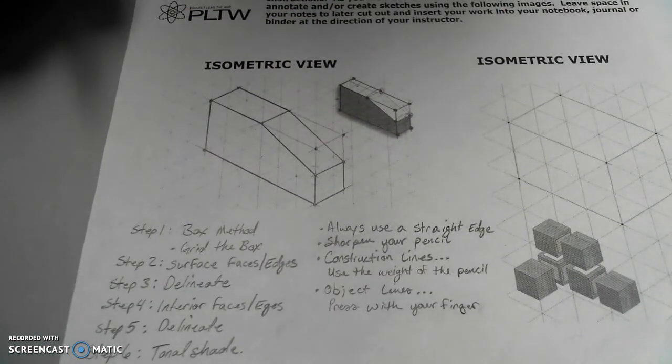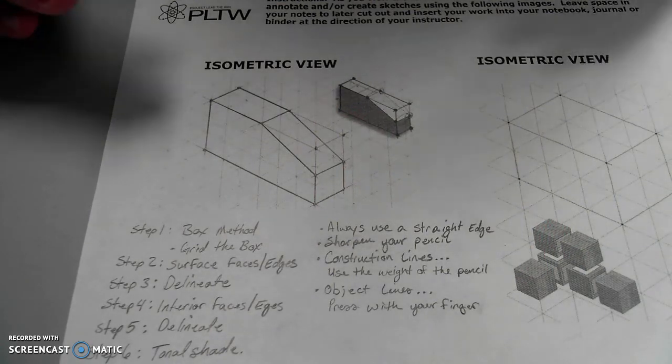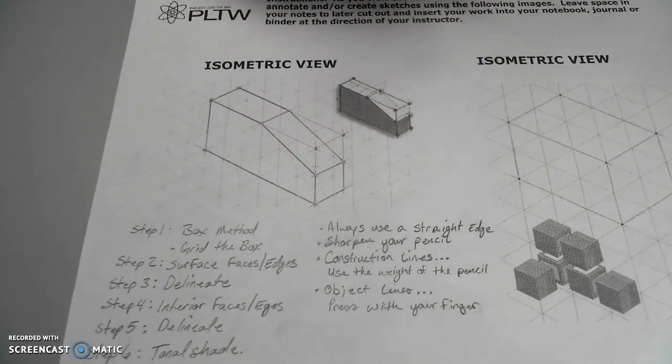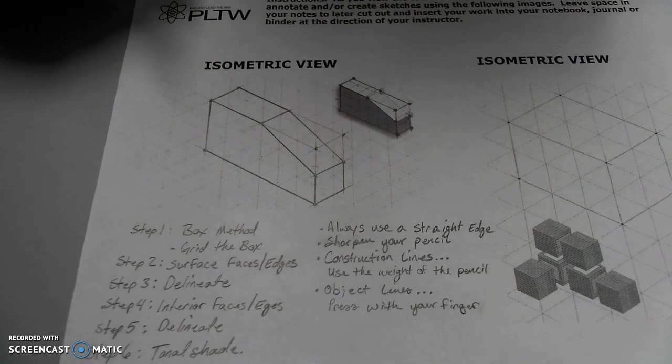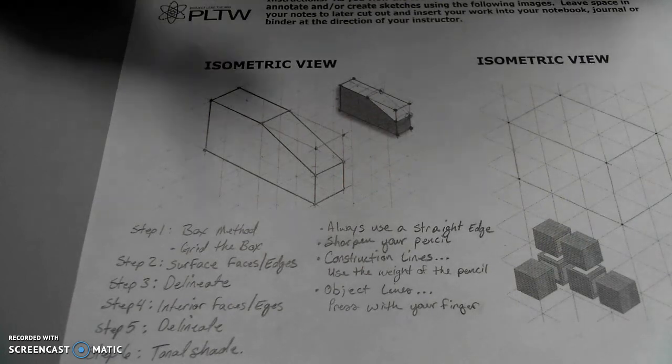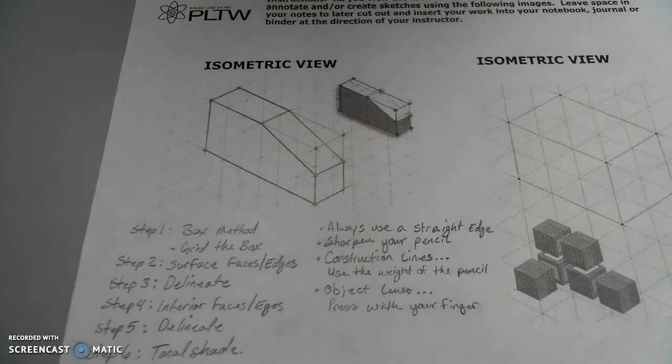The object is all but done. I need simply to apply some tonal shading. Tonal shading goes the same way. I'm going to stick with having my front face as the lightest side, and my right side face as the darkest side. Remember, I'm going to leave the top and the angled, non-parallel, slanted, chamfered, and canted face so that it is blank as well.